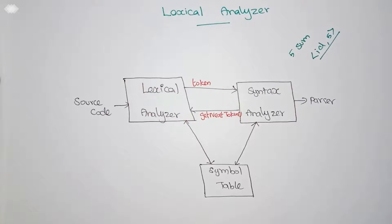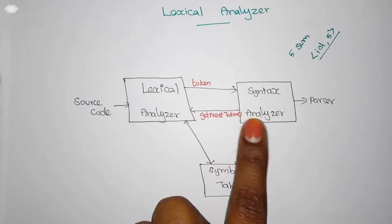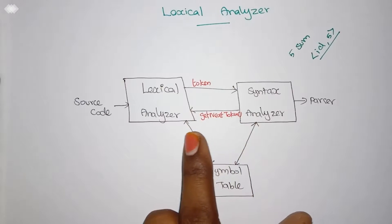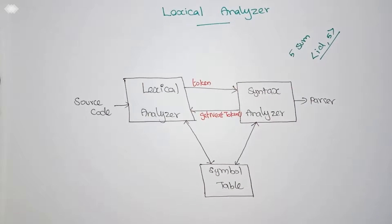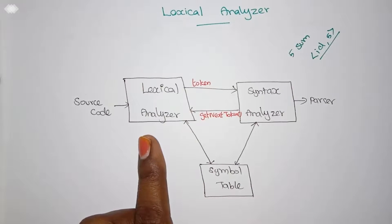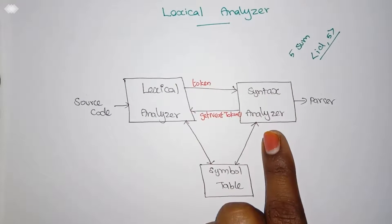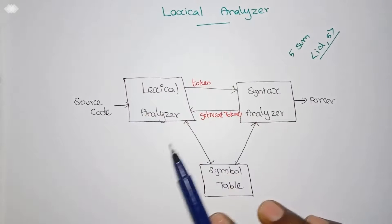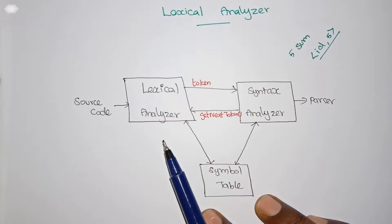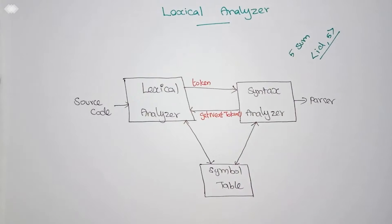The reason we have different phases is that even though both work together, they have different functions. The lexical analyzer reads the source code and converts it into a set of tokens, while the syntax analyzer takes the tokens and derives a parse tree. Separating them into two distinct phases — lexical analyzer and syntax analyzer — simplifies the design and improves the efficiency of the compiler.